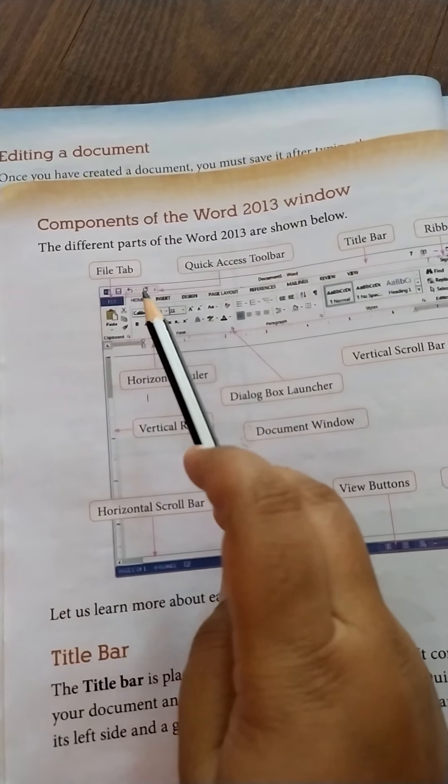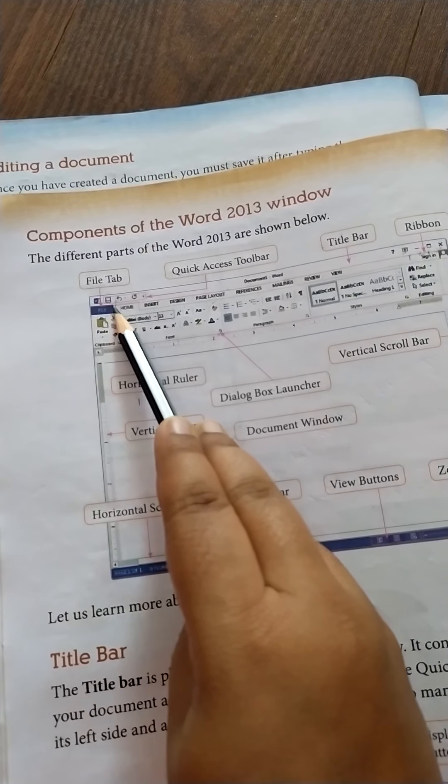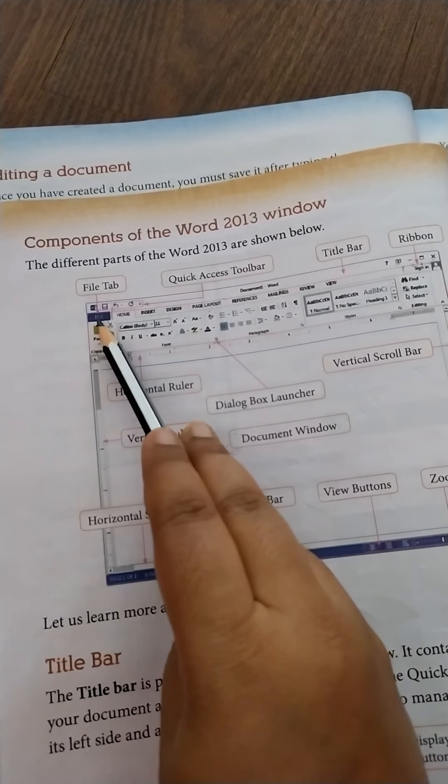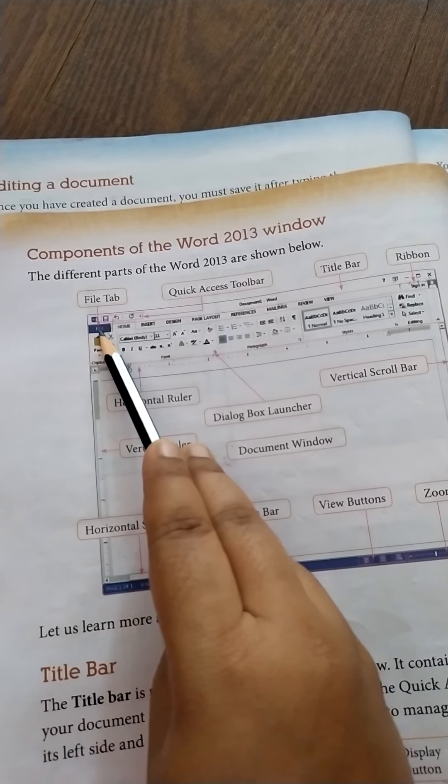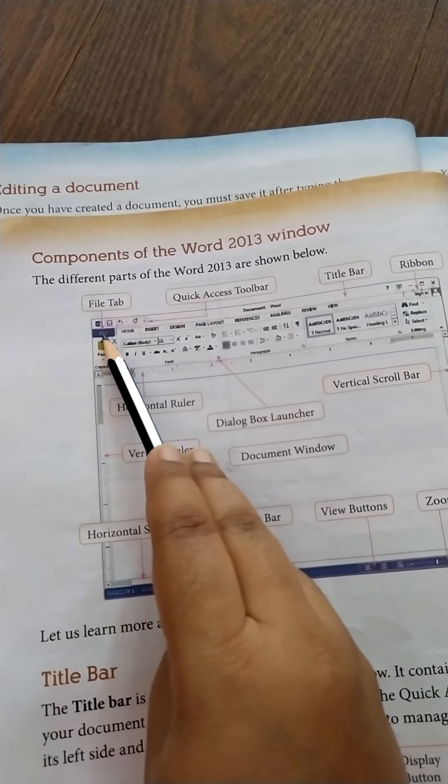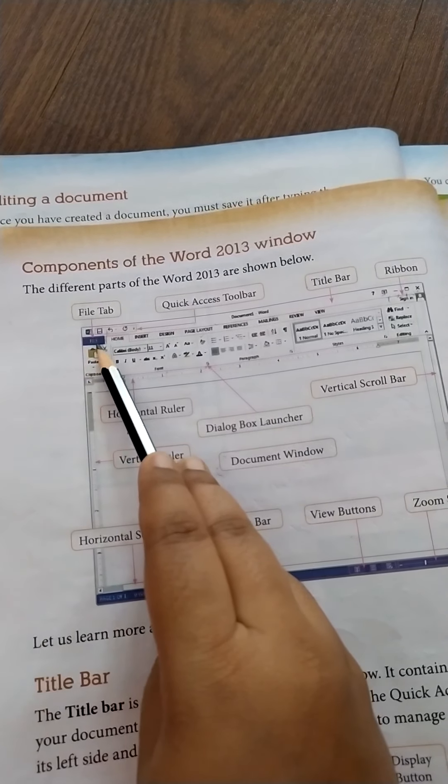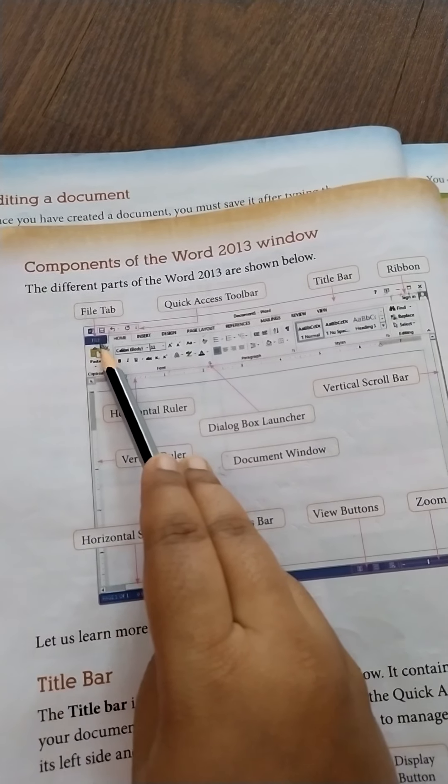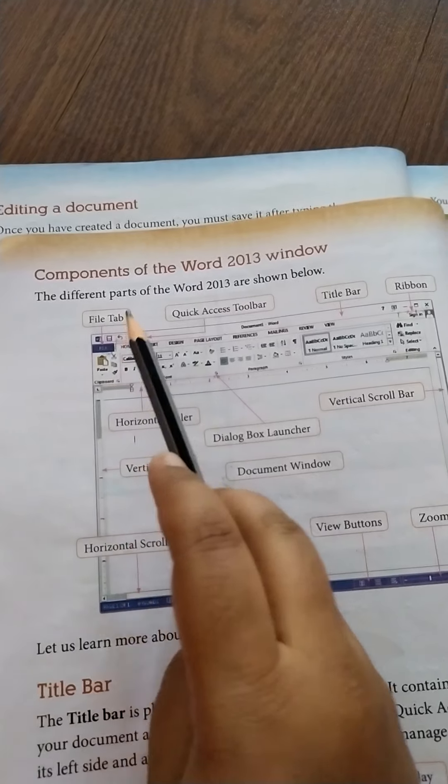Now we will talk about this file tab. This file tab is at the top left corner of the window. Whenever you click on it, it gets back to the backstage view, with options for opening a new document, opening an existing document, saving a document, printing a document, and previewing a document. All these things are inside the file tab.